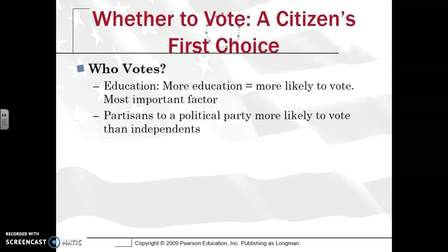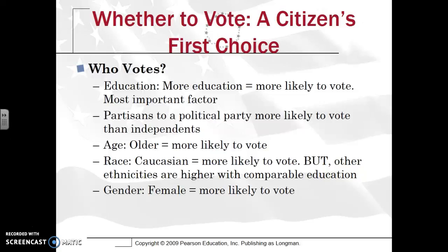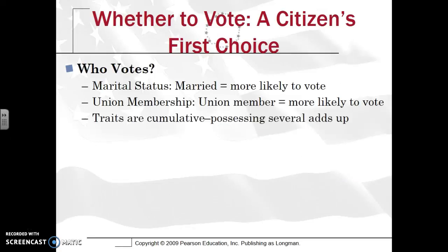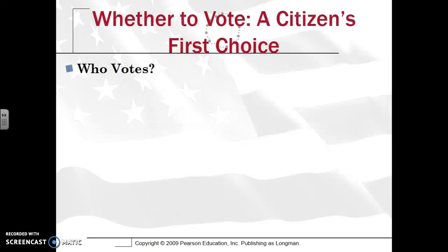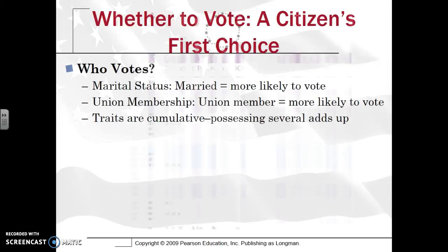The more education you have, the more likely you are to vote. The more attachment you have to a political party, the more likely you are to vote, as opposed to independents. The older you are, the more likely you are to vote — and you also have more free time, especially since older people tend to be retired. Caucasians are more likely to vote, but other ethnicities with comparable education are actually higher than whites. Females are more likely to vote. Marital status and union membership also increase the likelihood. The more of these traits you have, the more likely you are to vote.